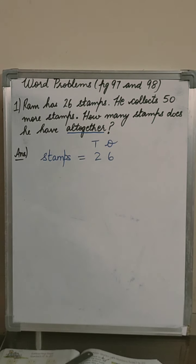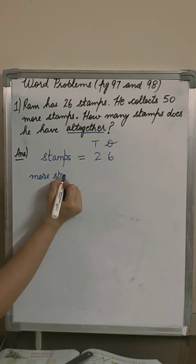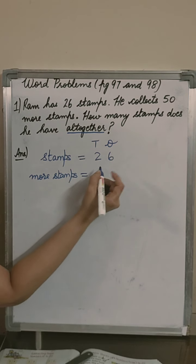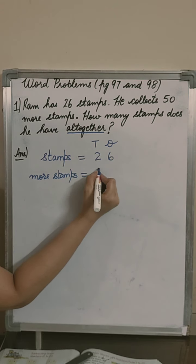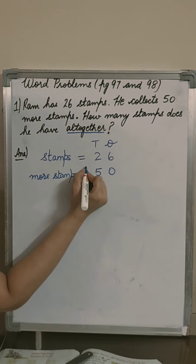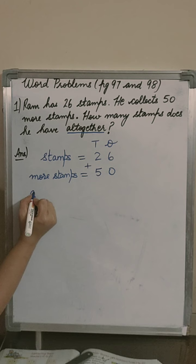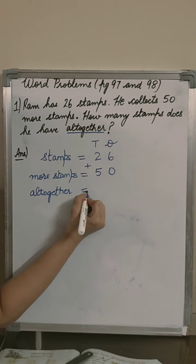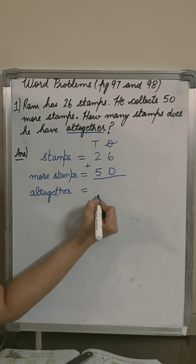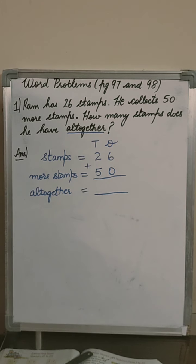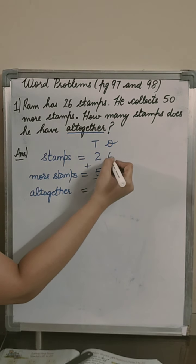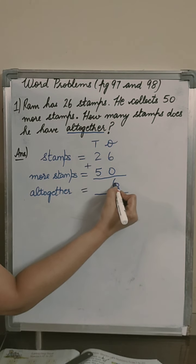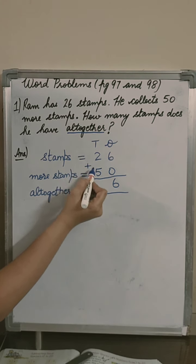He collects 50 more stamps. Ram has collected 50 more stamps. So, altogether means what you have to do? You have to plus. We have to start from one's column, 6 plus 0, 6. Then ten's column, 2 plus 5.